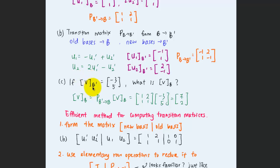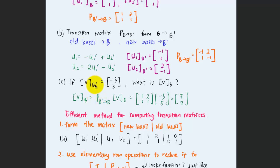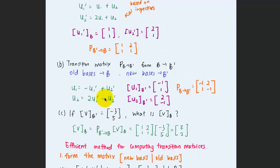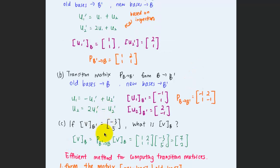The last part: given that the coordinate vector of v based on B prime is (-3, 5), what is the coordinate vector of v based on B? B is the new basis and B prime is the old basis. Multiply the transition matrix from B prime to B — which is [[1, 2], [1, 1]] — by the coordinate vector (-3, 5) to obtain the coordinate vector of v based on basis B.